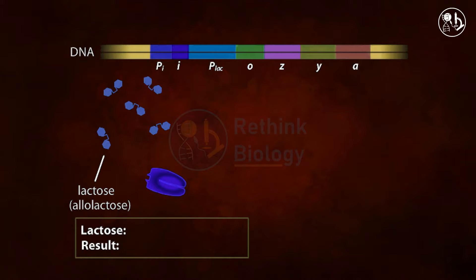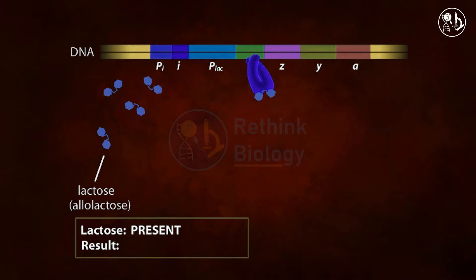When lactose is present in the cell medium, it binds to the lac repressor's allosteric site. The repressor's conformation is altered as a result, and in this configuration it can no longer attach to the lac operator site.